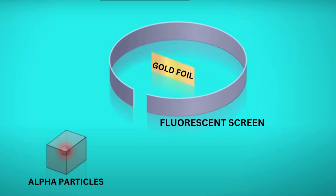As you can see, there are alpha particles, a gold foil, and a fluorescent screen. Rutherford's plan was to hang up a thin sheet of gold and surround it with a screen that could detect alpha particles. He would then fire alpha particles at the sheet, and from the marks made on the screen, he would work out the structure of the atom. Rutherford predicted that if Thomson's model was correct, all the alpha particles would pass straight through the gold atoms and make a mark directly behind the gold sheet.